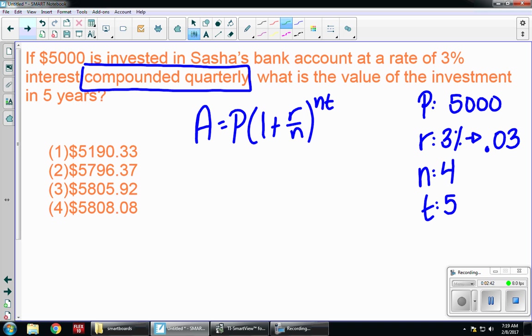So I've identified all of my variables. I'm just going to substitute in. A equals 5,000 times the quantity 1 plus .03 over 4 to the 4 times 5 power.